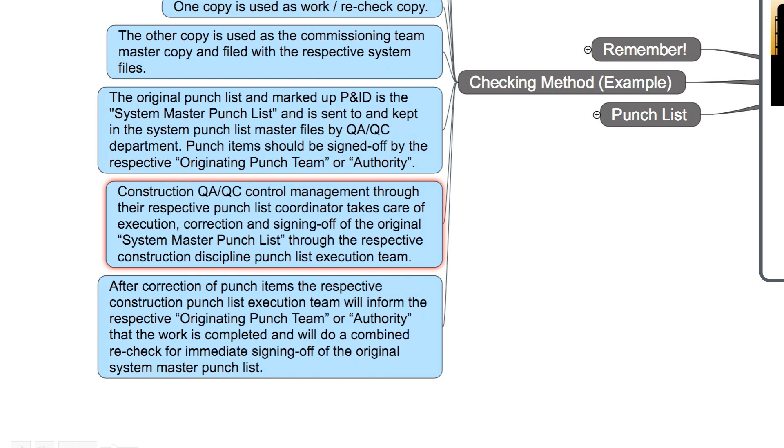Construction QA/QC control management through their respective punch list coordinator takes care of execution, correction, and signing off of the original system master punch list through the respective construction discipline punch list execution team. After correction of punch items, the respective construction punch list execution team will inform the respective originating punch team or authority that the work is completed and will do a combined recheck for immediate signing off of the original system punch list.